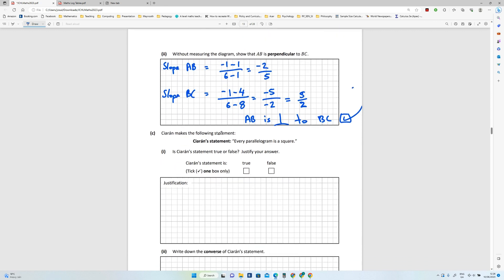Part C. Ciarán makes the following statement: every parallelogram is a square. Is this true or false? Well, the opposite is true. Every square is a parallelogram because the opposite angles are the same and the opposite side lengths are the same. But this is not true, so that's false. Some parallelograms have different side lengths.